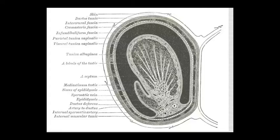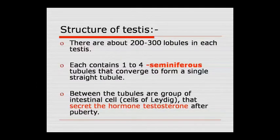In the middle is the mediastinum testis. The epididymis, sinus, and spermatic vein are shown, along with the ductus deferens, internal spermatic artery, and internal muscular tunic layer. Each testis contains 200 to 300 lobules, and each lobule contains 1 to 4 seminiferous tubules.